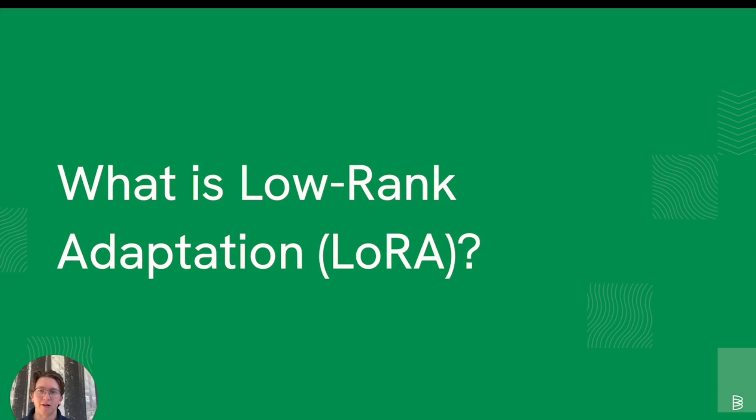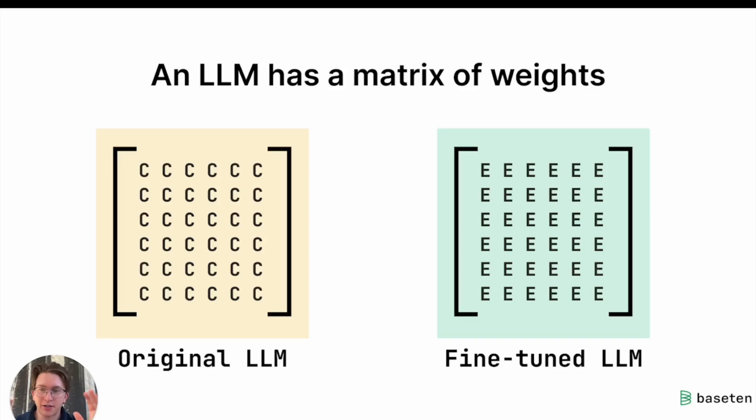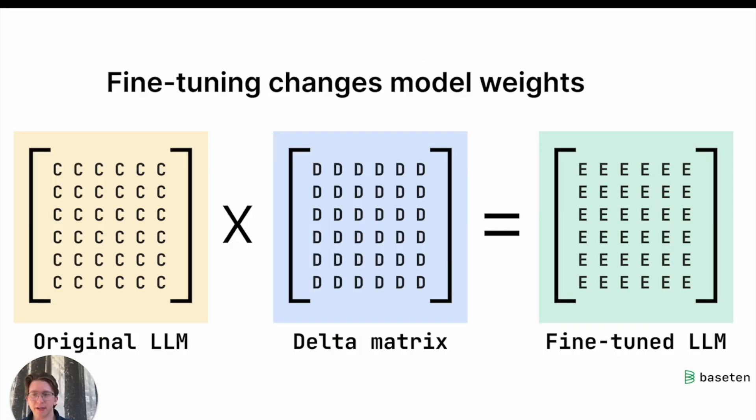What is LoRa, low rank adaptation? To go to a really high level, a large language model is like a set of matrices, basically. These matrices are full of numbers. And a fine-tuned version of an original model is just like the same type of matrix with different numbers in it. We can express that difference as a delta matrix.